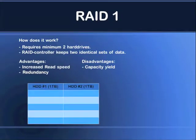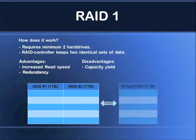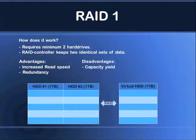Here we have the example. It's the same as in the RAID 0 video. We have two hard drives, one terabyte on each of them. We have our trusty RAID controller, and this is what the operating system sees — it sees one one-terabyte hard drive. This is what I meant by low capacity yield. You have two disk drives, each with a one-terabyte storage capacity, but the operating system only sees one terabyte. So you only get half of your total capacity.